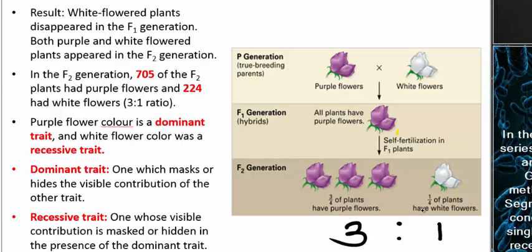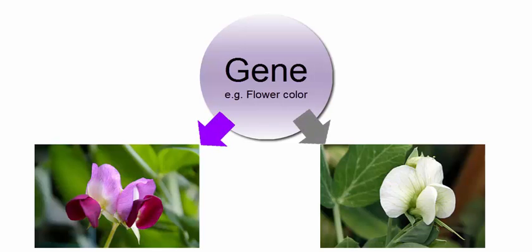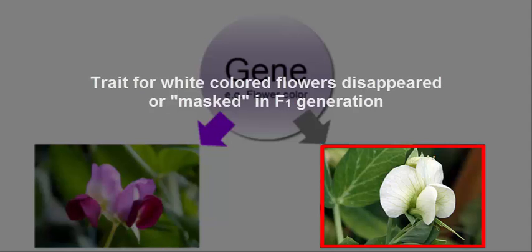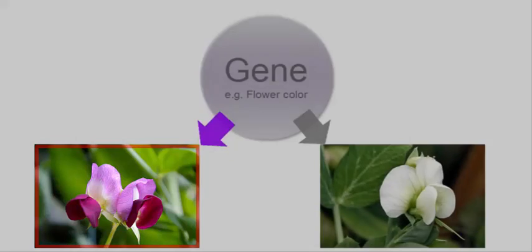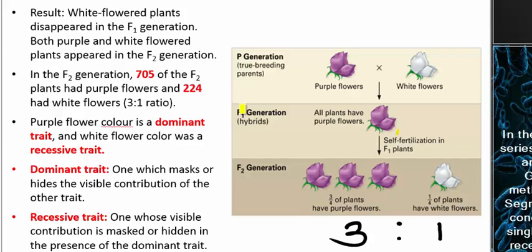Mendel was very insightful in his analysis of this observation. What he actually reasoned was that the heritable factor — or what we now call the gene — that is responsible for controlling flower color, white flower color specifically, was somehow hidden or masked in the F1 generation. It was hidden or masked because of the presence of the factor that controls purple color. So in Mendelian terminology, purple flower color is considered a dominant trait, and the white flower color that was masked in the F1 generation is considered a recessive trait. It was very insightful for him to discern that the factor was still present in the F1 generation, but just suppressed, hidden, or masked.